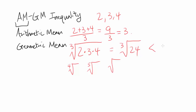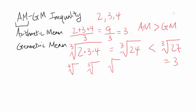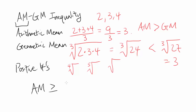And you may realize this is smaller than the cube root of 27, which is 3. So we have, in this case, Arithmetic Mean of 3 being greater than Geometric Mean, which is less than 3. It actually turns out that in every single case with positive numbers, Arithmetic Mean is greater than or equal to Geometric Mean. And this is what we are going to prove today.